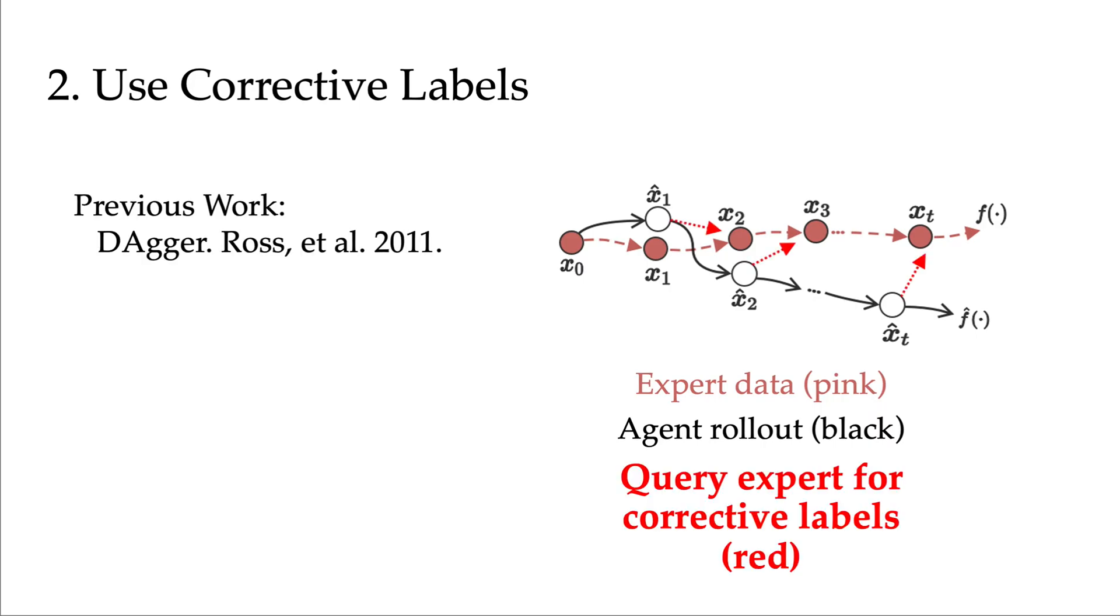There's a lot of work on using or collecting corrective labels. The most famous one, perhaps Dagger, basically queries the expert for corrective labels on learner rollout. However, we realize that this is actually pretty hard to apply to our task. Because even though I can teleoperate the robot to pick up something, I would not have any clue what to do when I am given any random state, like a slice of state, and I'm asked to provide the optimal action. It's almost impossible for me to give the optimal action label for any random state.